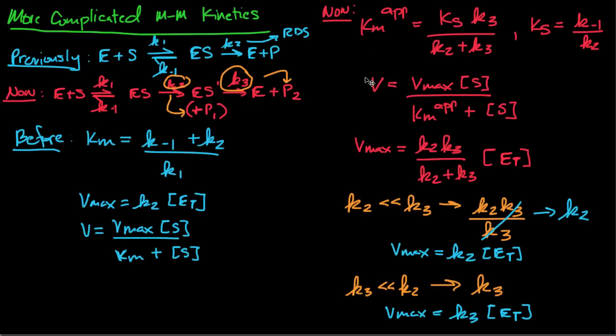The second thing is the overall speed, the overall rate of the reaction, is going to be determined by whichever reaction is slower. Is it K2 or is it K3? That's why our Vmax is going to be based upon K2 if K2 is much smaller, and it's going to be based upon K3 if that reaction governed by K3 is much smaller.